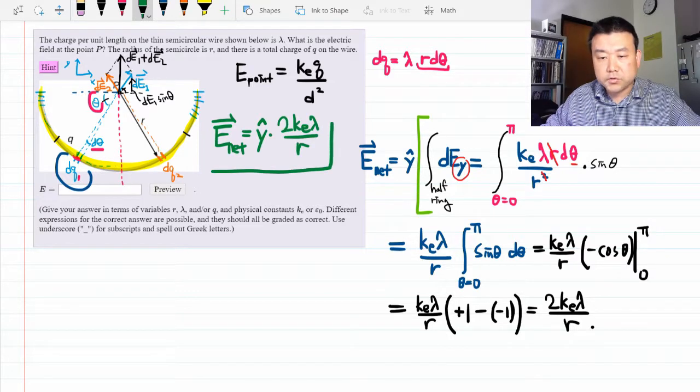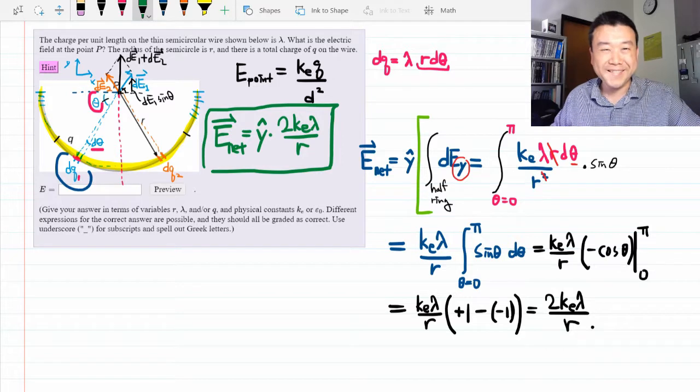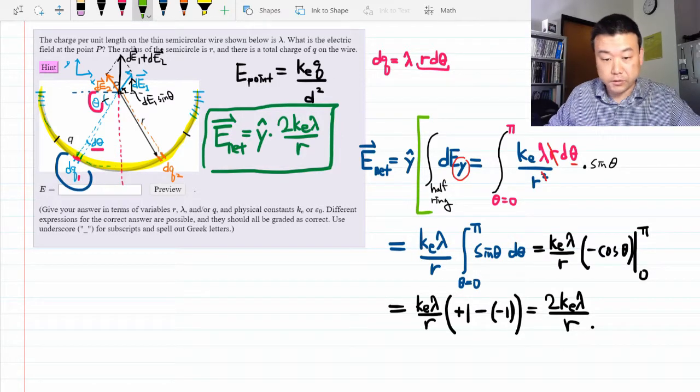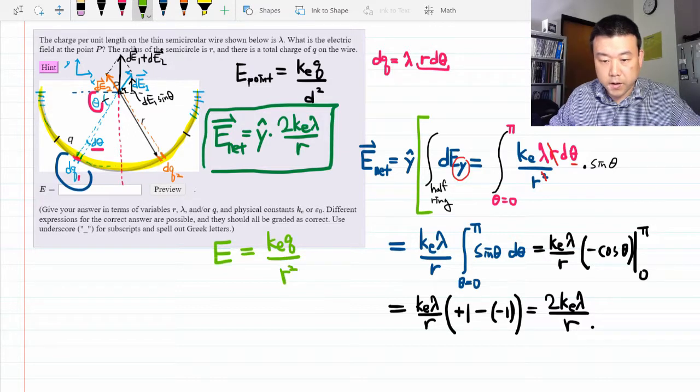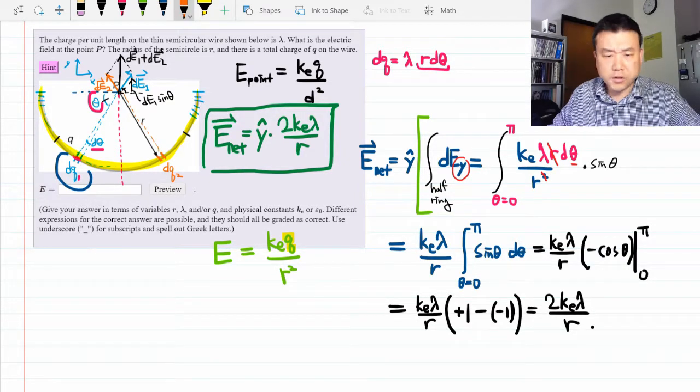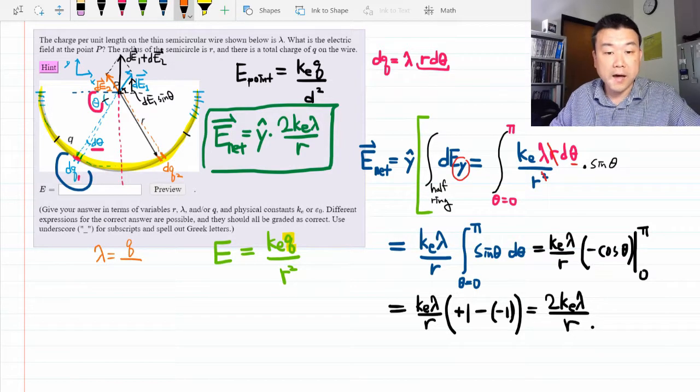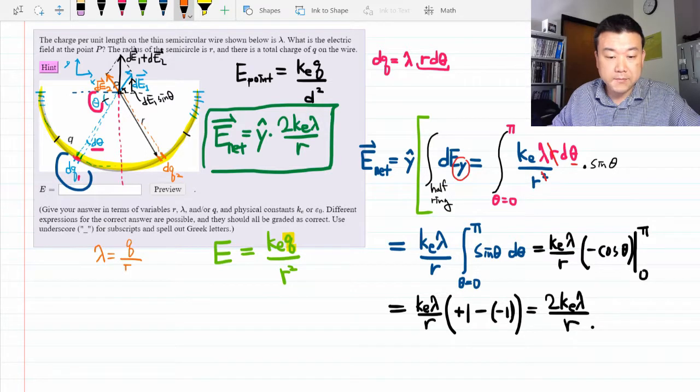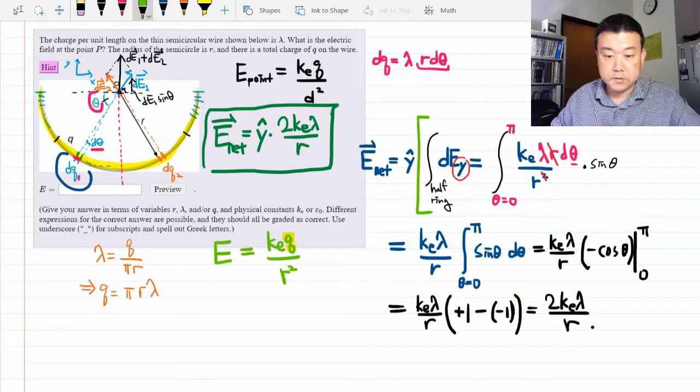Let's compare this to the answer we would have gotten if we naively ignore the directions. Just for fun. So if we naively ignore the directions, we would have said that the net electric field is ke q over r squared. To compare it to the correct answer, we need to rewrite q in terms of lambda. Let's do the calculation on the side here. The charge density lambda is equal to the total amount of charge divided by the length of the half ring. So that would be pi times r. Or q is equal to pi r lambda.